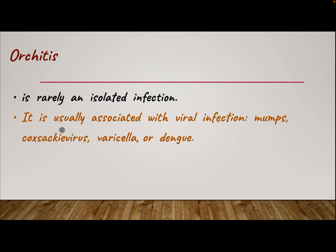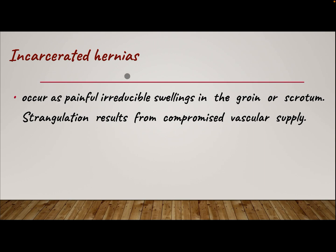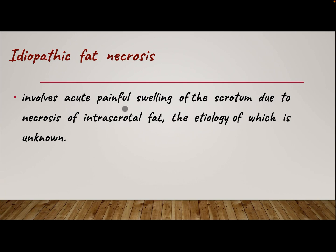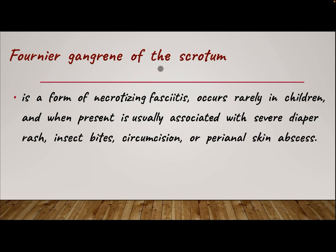Orchitis is a rare isolated infection, usually associated with viral infection — mumps, Coxsackievirus, varicella, or echovirus. Incarcerated hernia presents as a painful, irreducible swelling in the groin or scrotum; strangulation results from compromised vascular supply. Henoch-Schönlein purpura is a systemic vasculitis that may present as a purpuric rash or tense edema over the scrotum, with swelling and tenderness of the testis; scrotal pain may be the only presenting complaint. Idiopathic fat necrosis involves acute painful swelling of the scrotum due to necrosis of intra-scrotal fat of unknown etiology. Fournier's gangrene of the scrotum is a form of necrotizing fasciitis that occurs rarely in children and is usually associated with severe diaper rash, insect bite, circumcision, or perianal skin abscess.